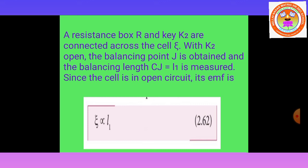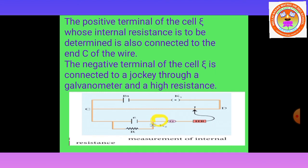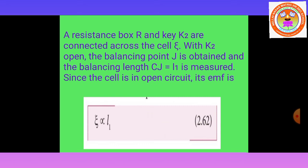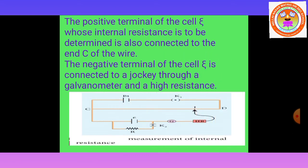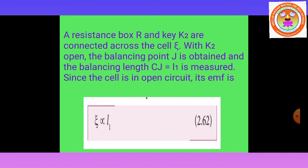With the key K2 open (open circuit), the jockey is adjusted on the manganine wire until the galvanometer shows zero deflection. The balancing length CJ = L1 is measured. From this, we write that the electromotive force ψ is directly proportional to L1.